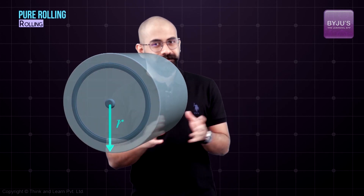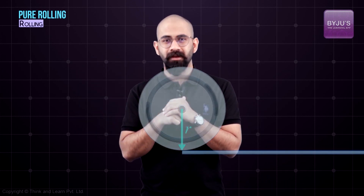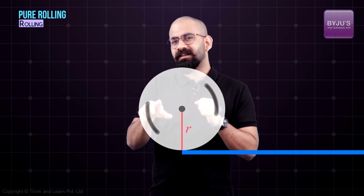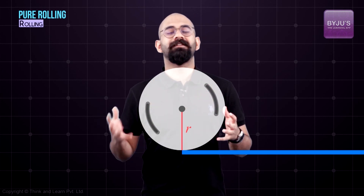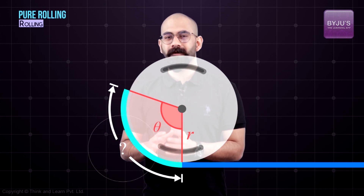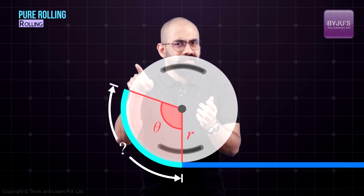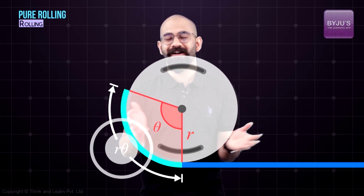Let's do a thought experiment. Say I have a cylinder of radius R, and a sheet of paper underneath it with some sort of glue on top. If I rotate the cylinder about its center by an angle theta, it would pull the sheet of paper. What would be the length of the sheet of paper that gets stuck onto the cylinder? It would be R times theta.